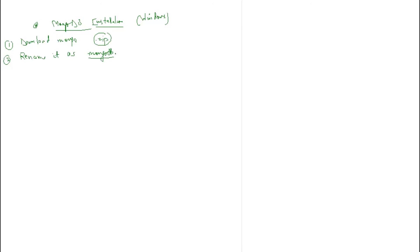Place it under C drive — you can place it anywhere, but for consistency let us keep it under C. Assuming your MongoDB folder is there, inside it you should be able to see a bin folder, and inside bin you should see all of the different commands.